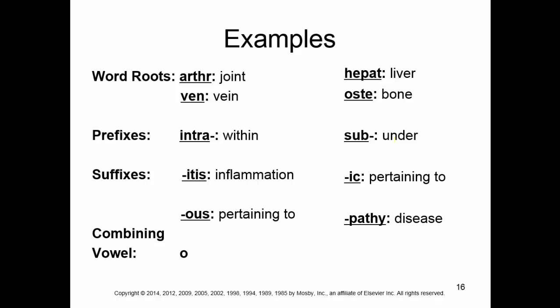Here are some terms we'll use a lot. Word roots: arth means joint, ven means vein, hepat means liver, oste means bone. Prefixes always have a line after them — intra means within, sub means under. Suffixes always have a line at the beginning — itis means inflammation, ic means pertaining to, us or ous also means pertaining to, and pathy means disease. Our combining vowel is most of the time going to be O.